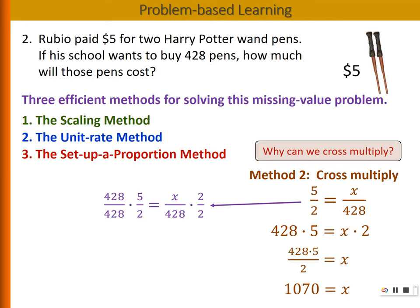by a fraction of 428 over 428. Essentially, I'm just multiplying the left side by 1. That means I haven't changed the value of 5 halves because I'm multiplying 5 halves by 1. Likewise, on the right side, I'm multiplying x over 428 by 1. 2 over 2 equals 1. So these two equations are actually equivalent.